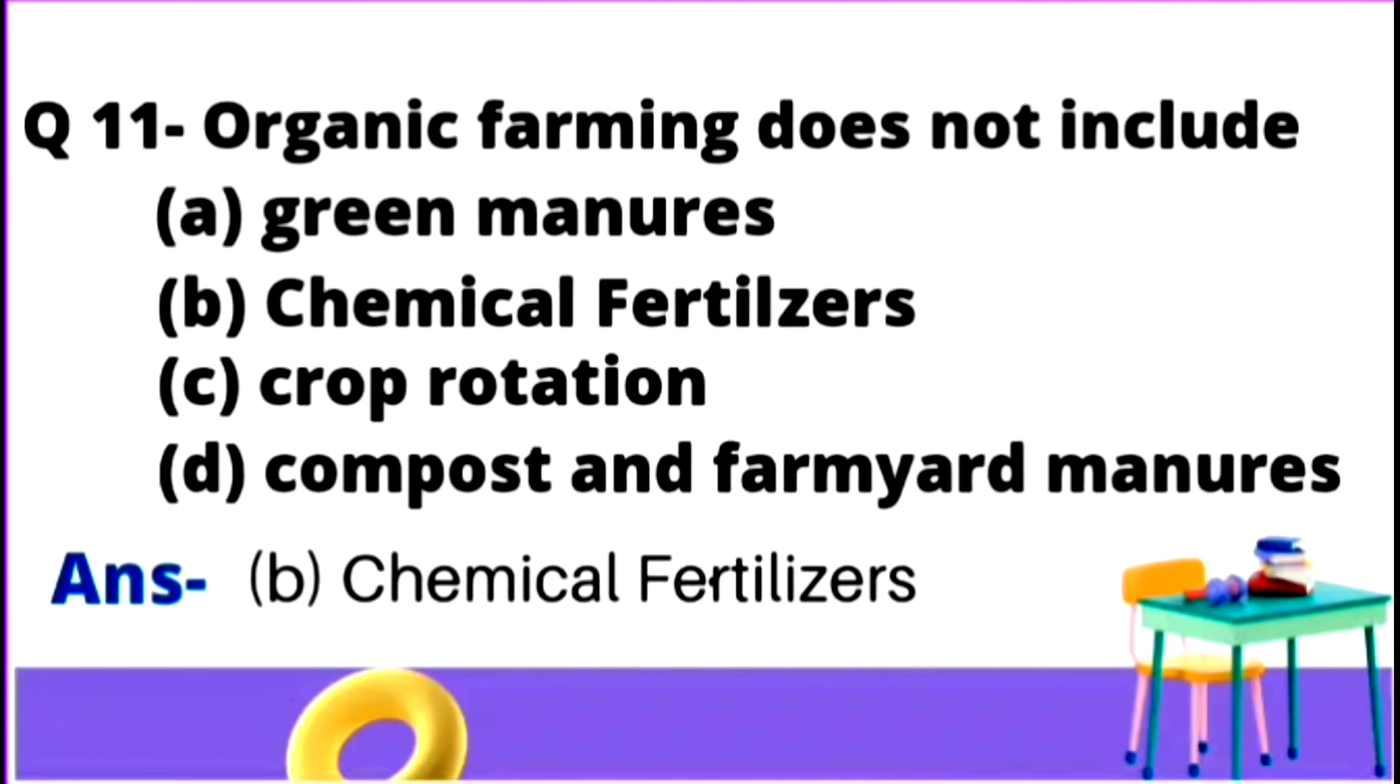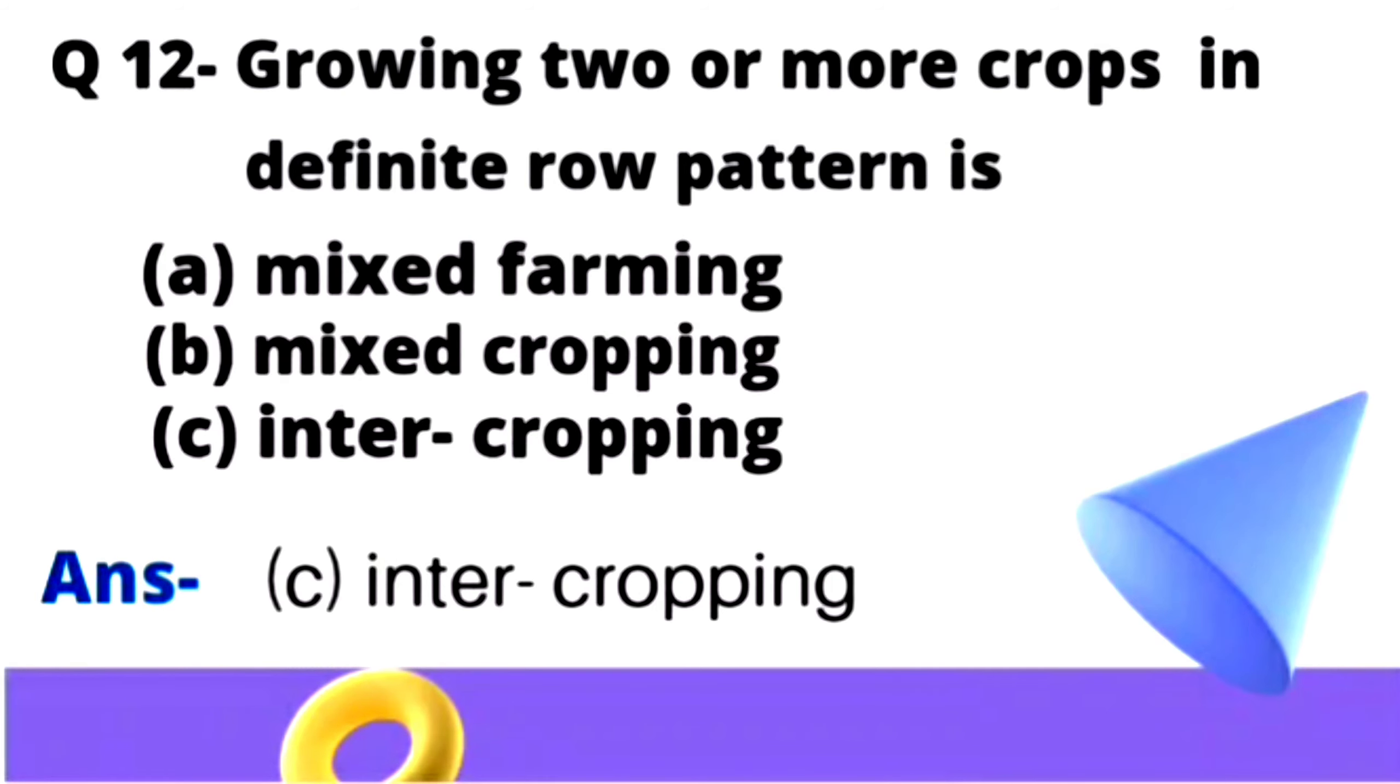Question 12: Growing two or more crops in definite row pattern is option A mixed farming, option B mixed cropping, and option C intercropping. If we grow in definite row pattern, what kind of cropping is this?